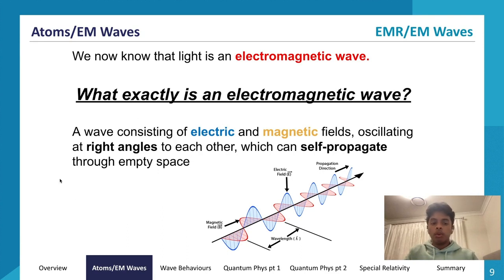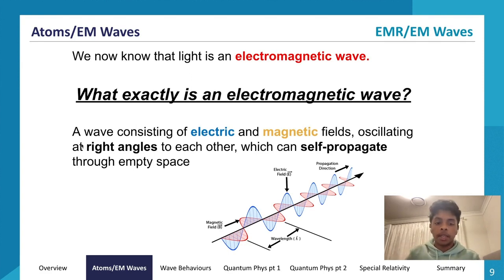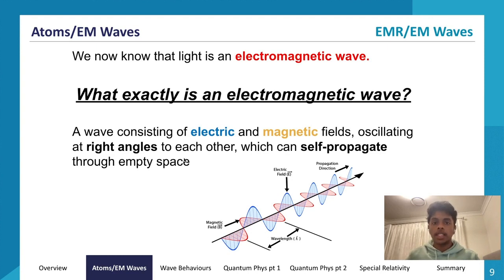The important things to state in a definition of electromagnetic waves: they consist of both an electric and magnetic field, these fields oscillate perpendicular to each other, and electromagnetic waves can self-propagate.